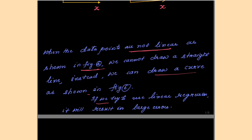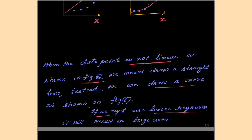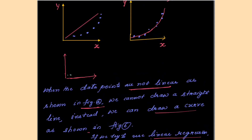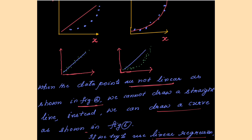If we try to use linear regression on non-linear data, it will result in large error. In previous examples, the data points were linear, so the best fit line passed through the data points and we could see very minimum error. But when the data points are not linear, if you draw a line, you can see the best fit line is here while the data points are elsewhere — resulting in maximum error. So to avoid such errors, we will draw a curve here.